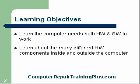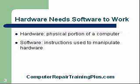Learning Objectives. We're going to learn that the computer needs both hardware and software to work. Both are needed — one can't work without the other. The hardware is the actual physical component, what we can see, touch, and handle. The software is instructions used to manipulate the hardware — it drives the hardware and gets it to do something for us. We're going to learn about many different hardware components inside and outside the computer.